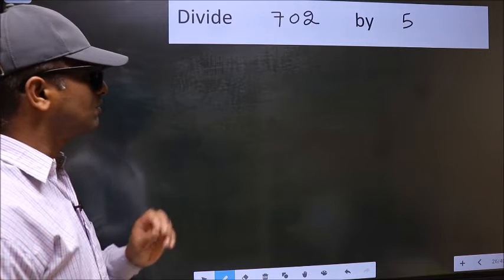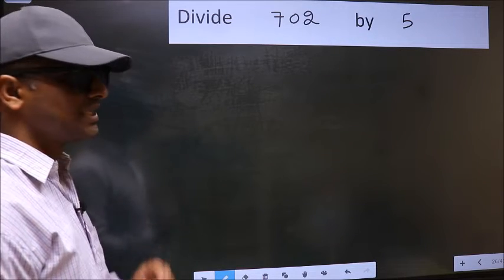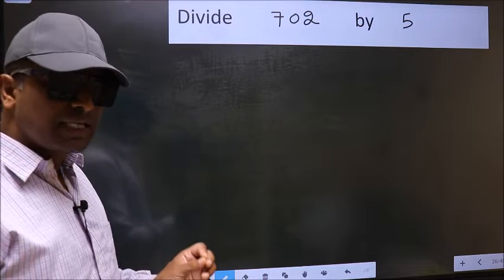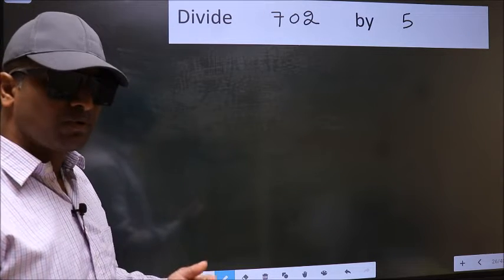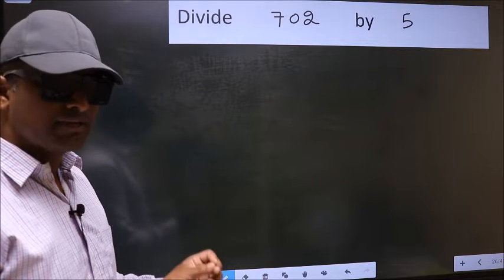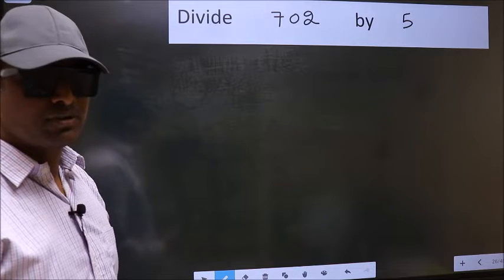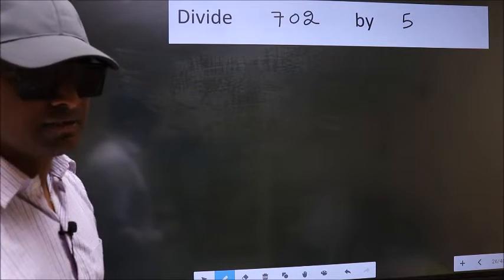Divide 702 by 5. While doing this division, many do this mistake. What is the mistake that they do? I will let you know. But before that, we should frame it in this way.